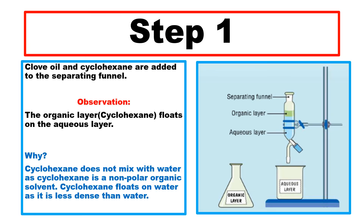Step one: the clove oil emulsion and cyclohexane are added to the separating funnel. The organic layer — cyclohexane — floats on top of the aqueous layer because cyclohexane does not mix with water, as it is non-polar, and it is also less dense than water.